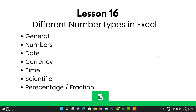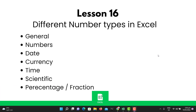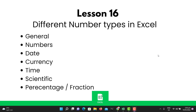Hi and welcome to another lesson of the Excel for Absolute Beginners course. In this lesson, which is lesson 16, we are looking at the various number types in Excel. We are going to explore each of them — the most commonly used ones — which include general numbers, date, currency, time, scientific notation, percentage, and fraction.